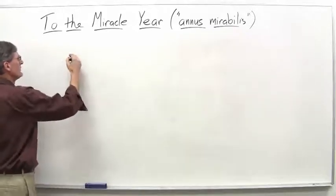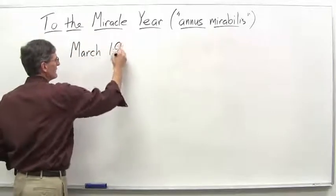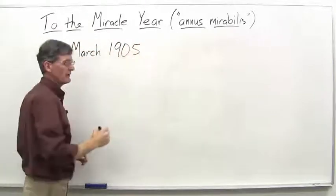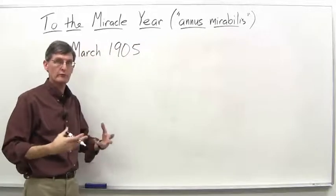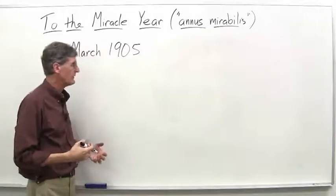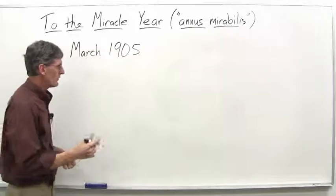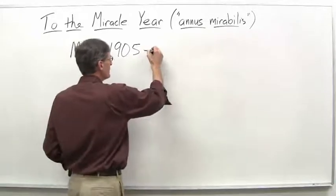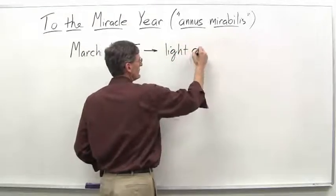So March 1905, and we're just going to give a brief summary of each. Obviously one of them, the one that dealt with what became known as the Special Theory of Relativity, will be our focus in this course. But in March 1905, he published a paper that essentially introduced the idea of the light quantum.